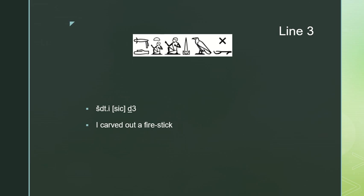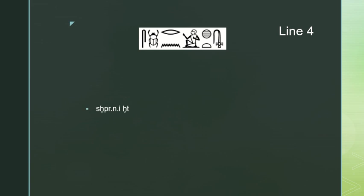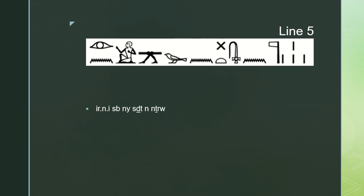I carved out a fire stick. I've chosen to translate what follows as a second tense — Hock says this is possible, or it could be a regular continuative sejim-nf following the aha and sejim-nf pattern. I like the idea of two simultaneous actions: if you have a second tense and another second tense, it's a 'just as... then' construction. So: just as I made a fire, then I made a burnt offering to the gods. Seb ni sejim-nf means 'burnt offering' — it is a stock phrase, an idiom you just have to know; the dictionary should tell you that.